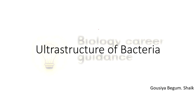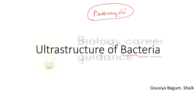First of all, the best example of a prokaryotic cell is bacteria. Because bacteria has almost any prokaryote type. So the ultrastructure of prokaryote and ultrastructure of bacteria is one and the same. We have to use bacteria as a model organism for most of the prokaryotes.